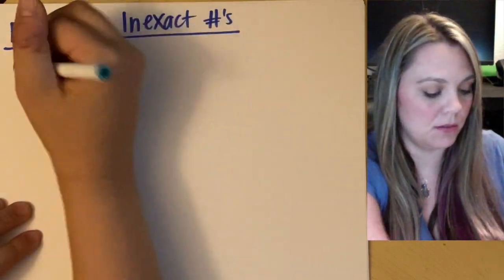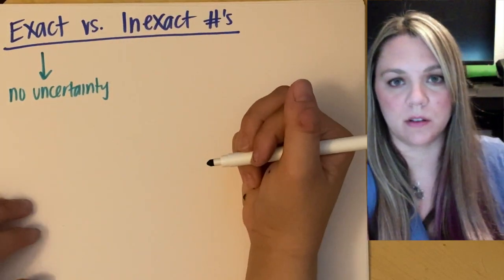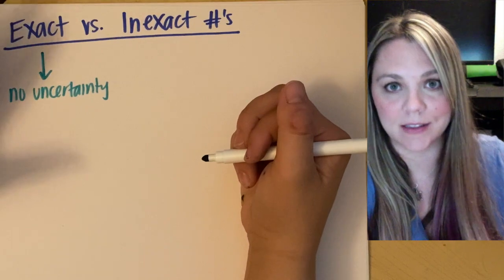An exact number means you have no uncertainty in the number. Okay, it is in fact an exact number.